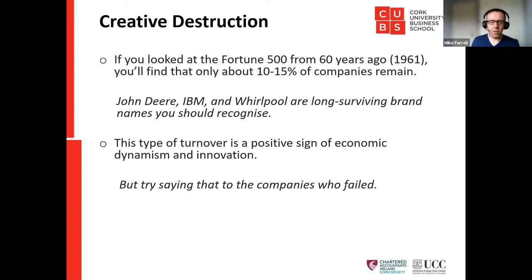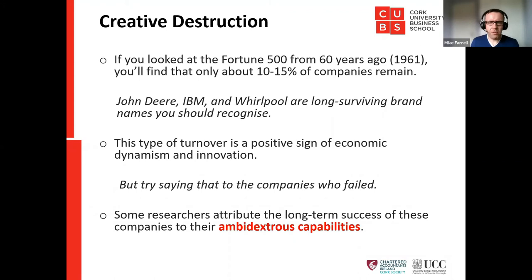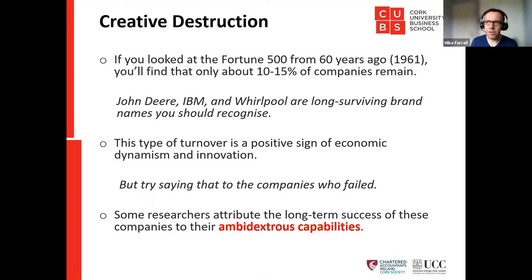We need to ask whether there is any underlying factor causing organisations to fail over time. What I'm primarily interested in is that some researchers attribute the long-term success of surviving companies to their ambidextrous capabilities. We'll go through what ambidexterity is, what people say it is, what it isn't, and then move towards accounting-related topics — performance measurement systems — and what the research shows there.